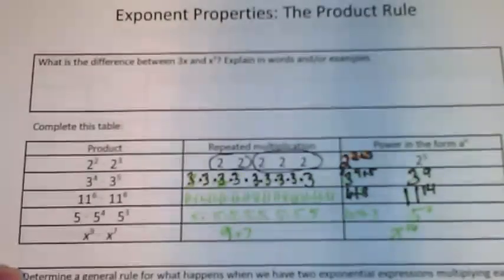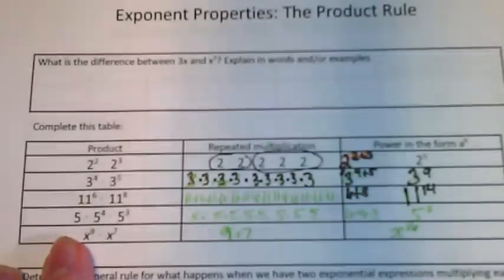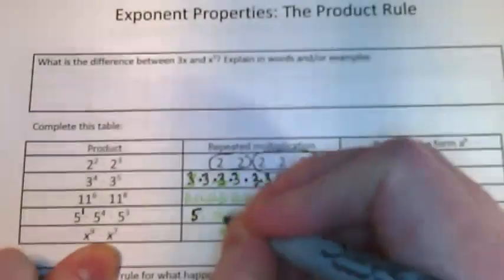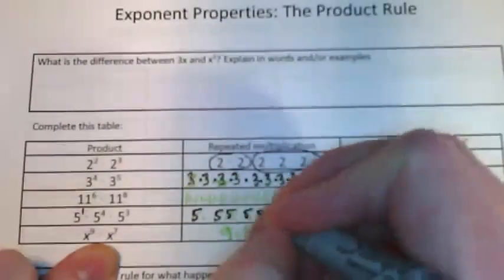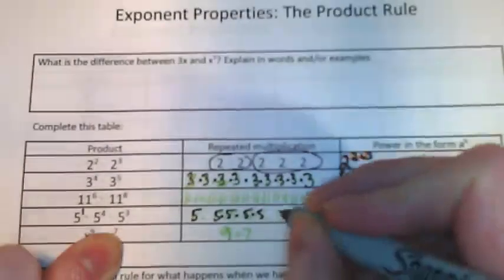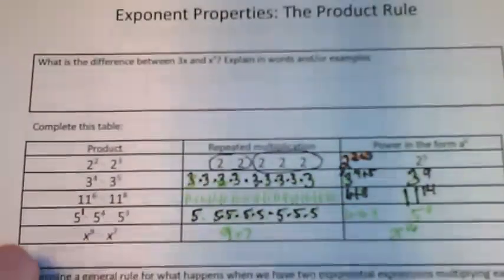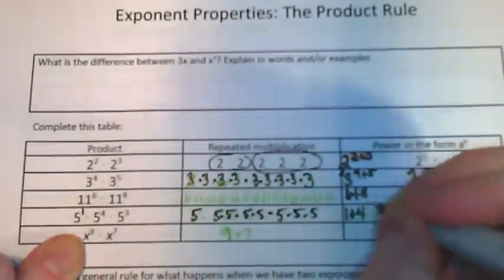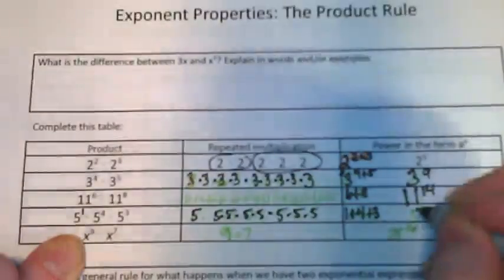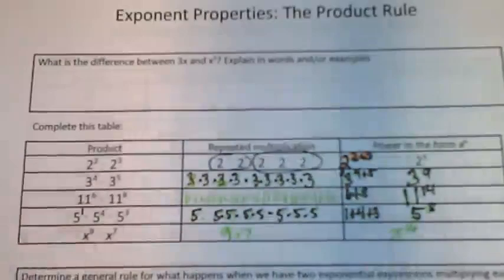Notice with the fives, there's no exponent on 5 here. That means that that's an invisible 1, so I'm still going to write that 5, and then 1, 2, 3, 4 for the next base, 5 to the 4th, and then 5 to the third. We have 1, 2, 3, three more of them. That means when I'm adding these exponents, I'm adding 1 plus 4 plus 3. That becomes 5 to the 8th power.